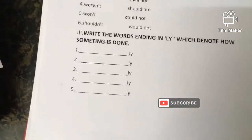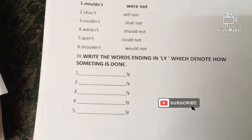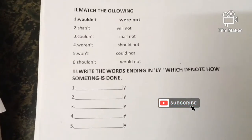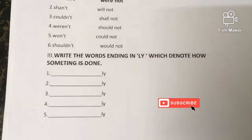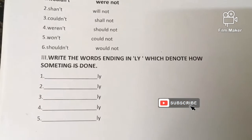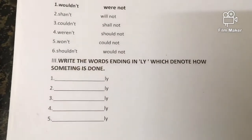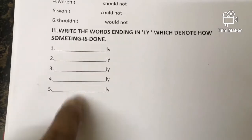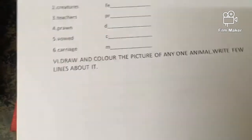Words ending with '-ly': quietly, silently, strongly, firmly. Likewise, five are given here — you write ten words. Five are already there; write five more in the space. If you do not find any, see the dictionary. Write as many as possible.